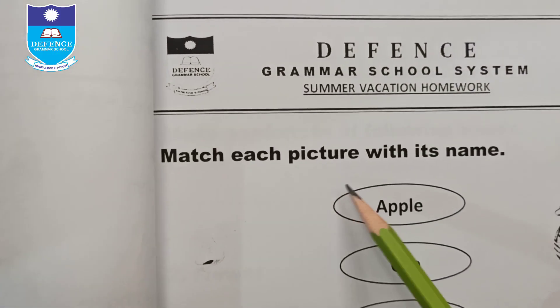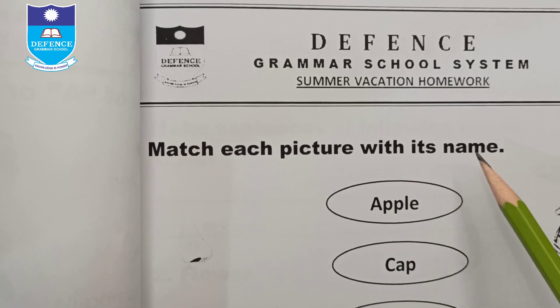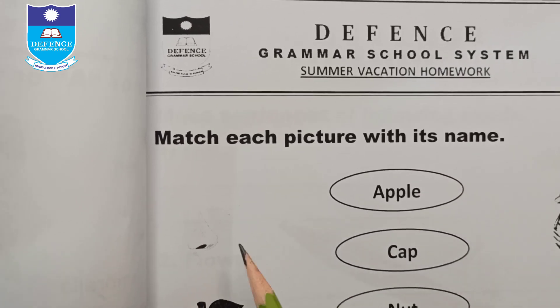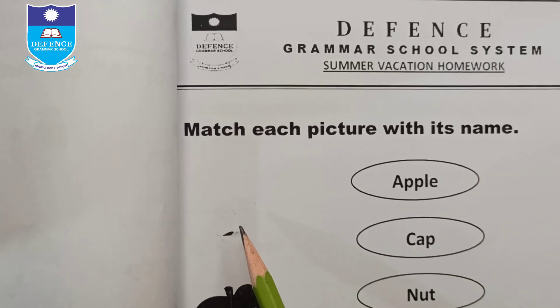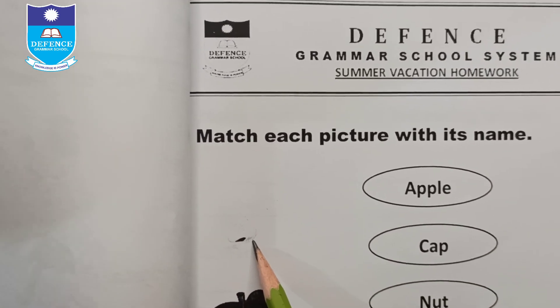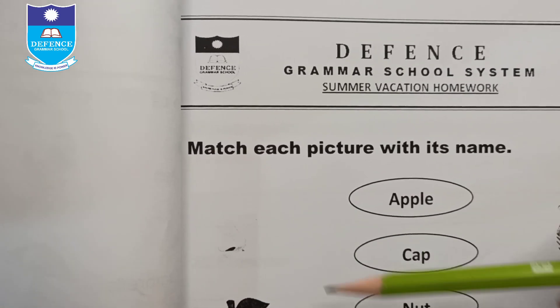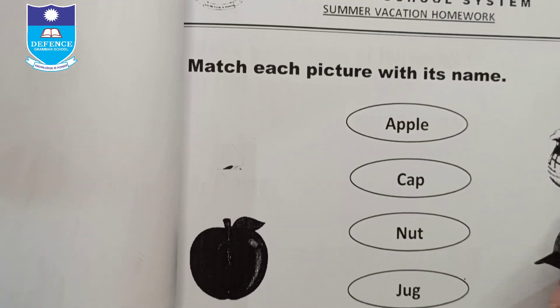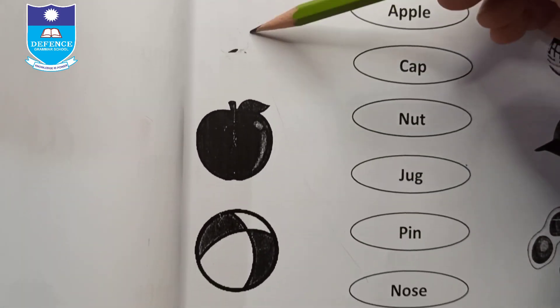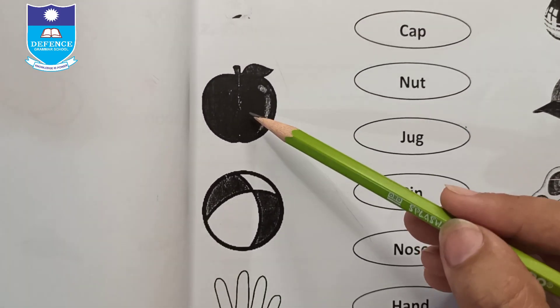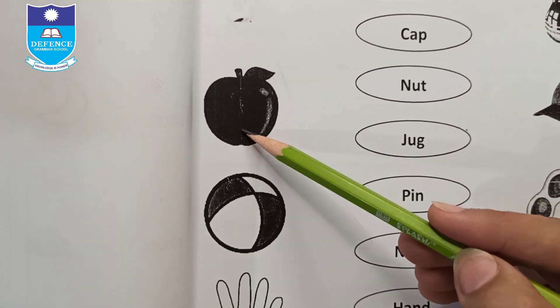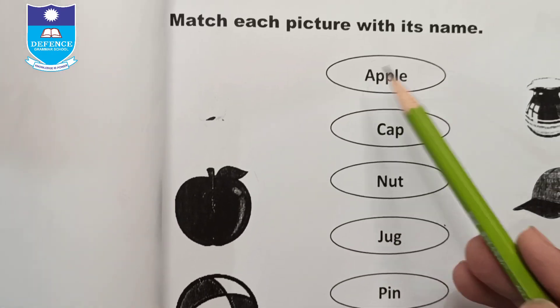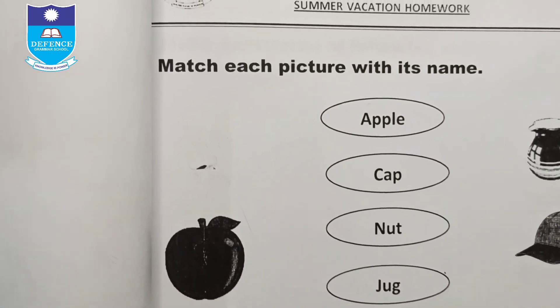Match each picture with its name. For example, the first picture is 'nose' — match 'nose' with the word 'nose'. Similarly, match 'apple' with the word 'apple'.